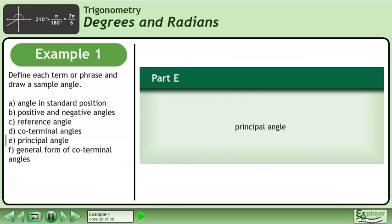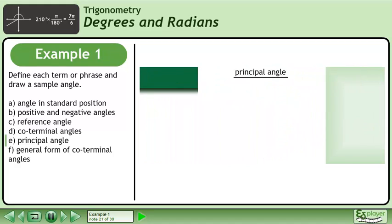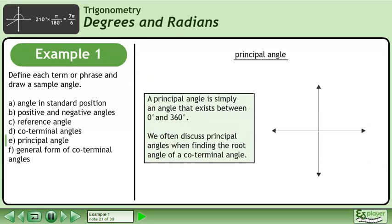In Part E, we'll define the principal angle. A principal angle is simply an angle that exists between 0 degrees and 360 degrees. We often discuss principal angles when finding the root angle of a coterminal angle.